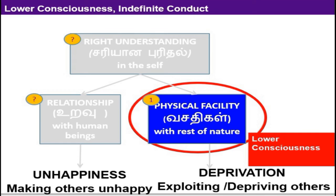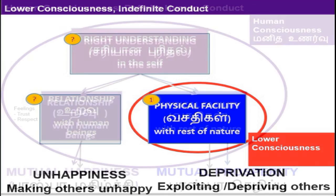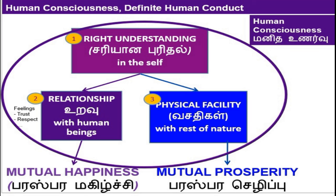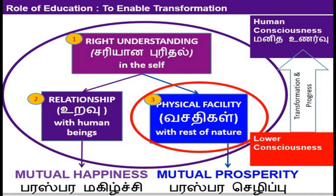If you concentrate only on physical facilities without proper understanding and without proper relationship, then comes a lower consciousness that leads to only deprivation — exploiting or depriving others — and gives only unhappiness. But if we have the right understanding in relationships and in the usage of physical facilities, then it leads to mutual happiness and mutual prosperity — that is called human consciousness or higher consciousness. So the role of education is to transfer from lower consciousness to higher consciousness by introducing right understanding in relationships and in the use of physical facilities.